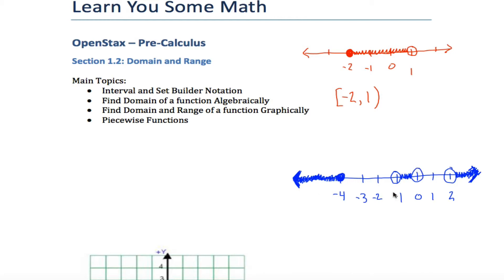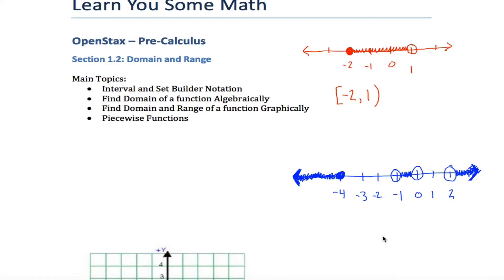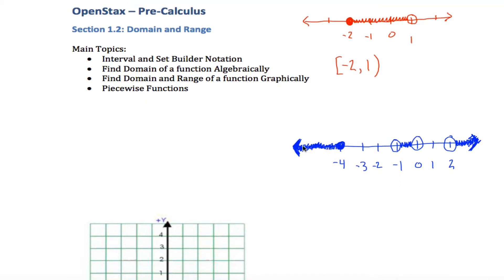How would you write this in interval notation? We really have three different intervals. The middle one you might already be able to do: all the numbers from negative one to zero. The lower bound is negative one, the upper bound is zero. Since I don't want to include either endpoint — shown by the open circles — I use parentheses. So that middle interval is represented by negative one, zero in parentheses.